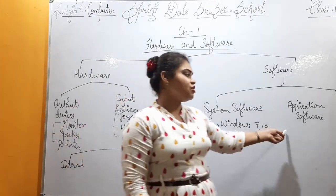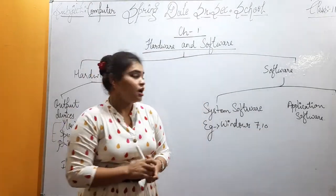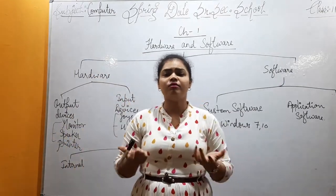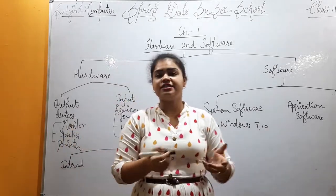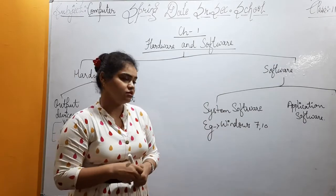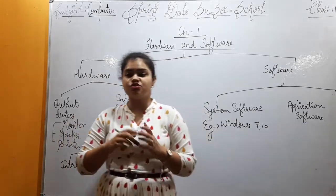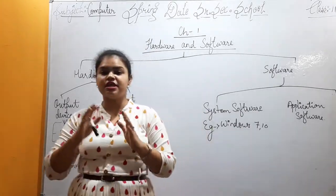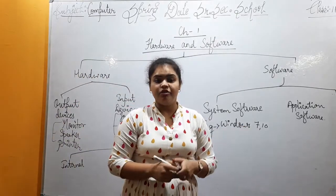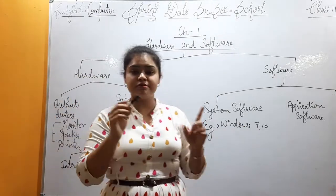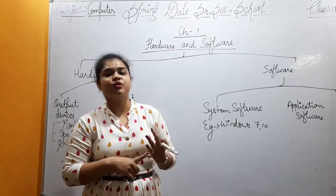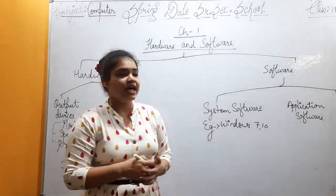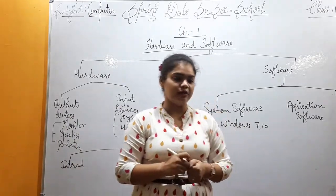Application software are tools in which we can write or do anything. For example, if we want to make a painting, we open Paint, select a color from the bucket, choose shapes — circle, triangle, square, rectangle, oval — make a shape, fill the colors inside, and create a beautiful picture.